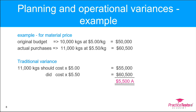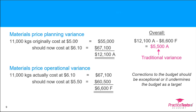For example: original budget of 10,000 kilos at $5 a kilo = $50,000. We actually purchased 11,000 kilos at $5.50 a kilo = $60,500, so the traditional variance is $10,500 adverse. However, suppose there was an error in the original budget — it should have said $6.10 rather than $5.00, because the world price of this material went up during the period.